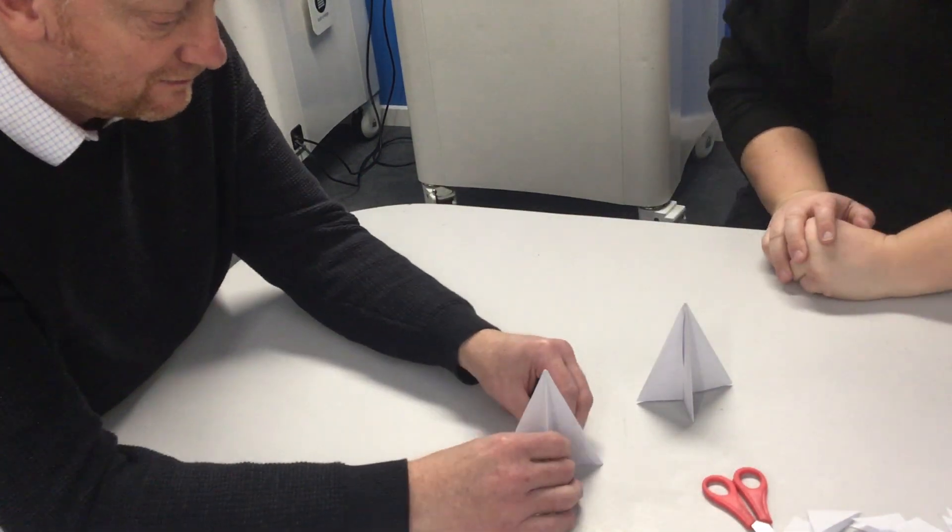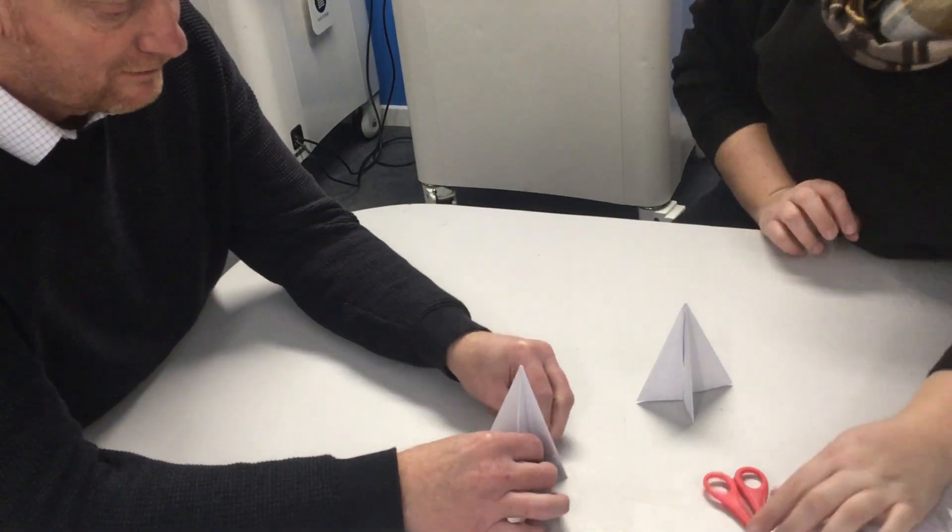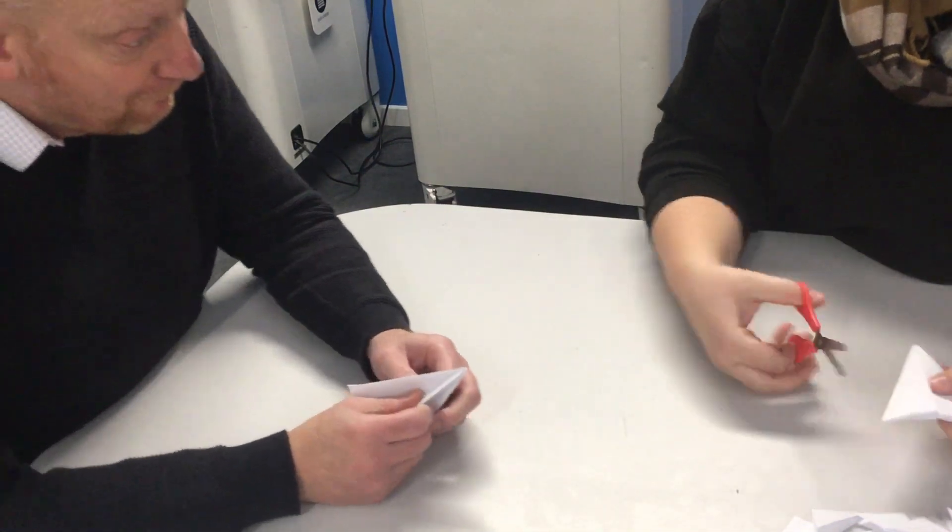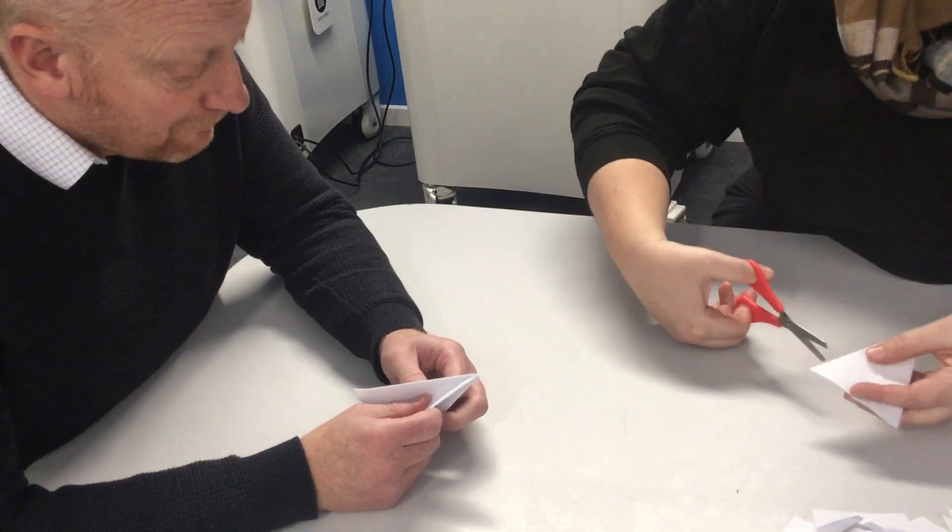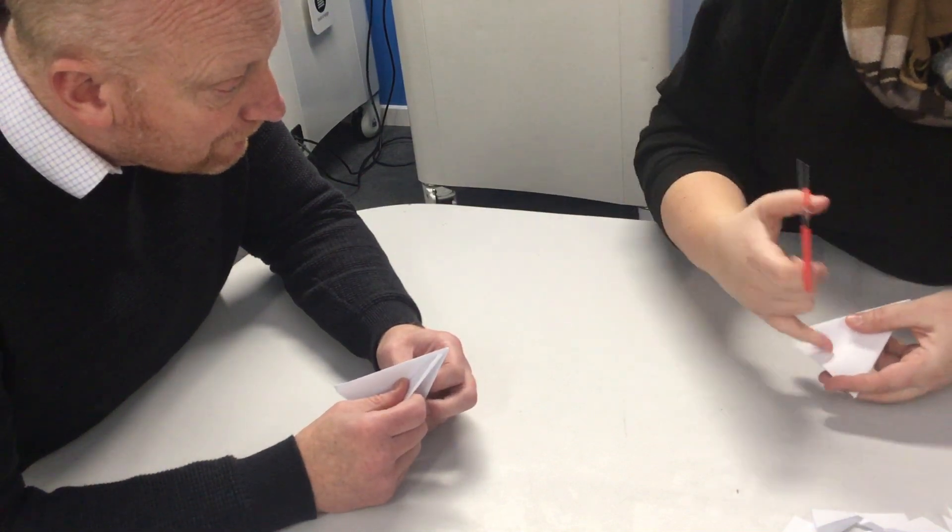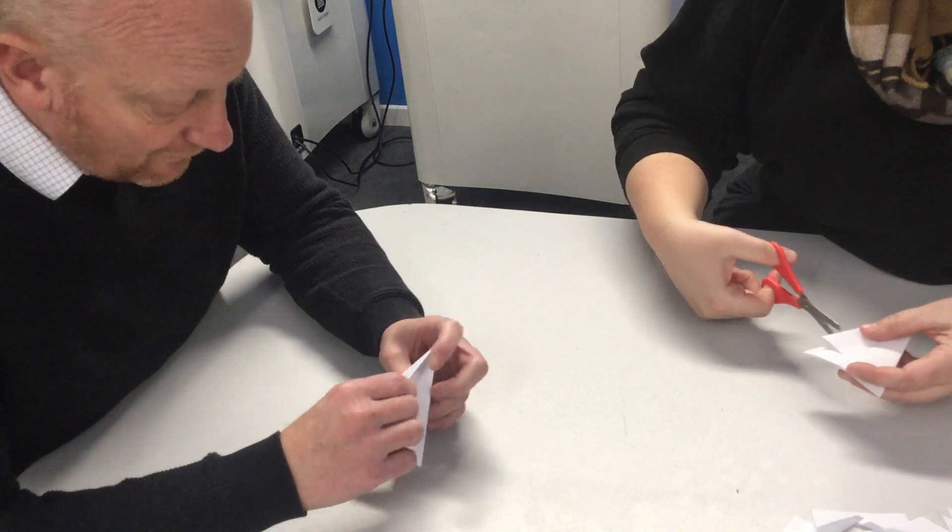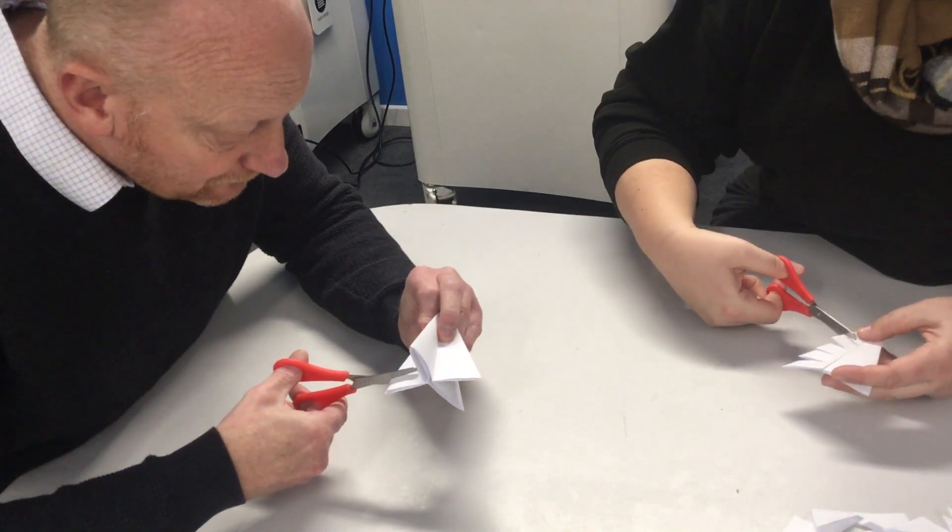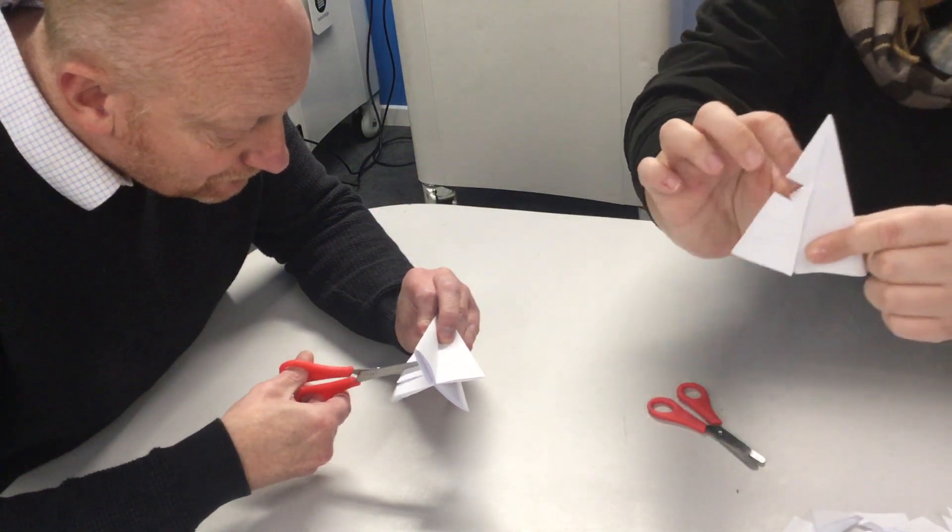So you could leave it there or you can make it a bit more fancy. And I'll show you how to make it more fancy. So you can do as many cuts as you like up here. But when you do it you're not going to go all the way into the centre line otherwise it will cut it open. So you're going to do a few cuts up your side of your tree like this.